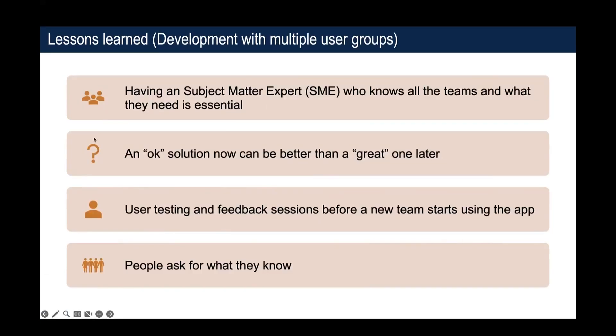We also discovered several lessons for implementing text embeddings when working on a team. Having a subject matter expert is essential. Being okay with an okay solution and then iterating to a great one later is fine — we went from originally requiring manual labeling to then having simple text similarity to then using text embeddings and then training our own text embedding models. Each step along the way as we iterated on SMART, the survey coders were extremely happy with the gradual improvements. Getting user testing and feedback was crucial to delivering successful updates, and it's important to trust your team and your users — they will ask and they know what they want.